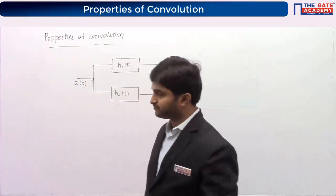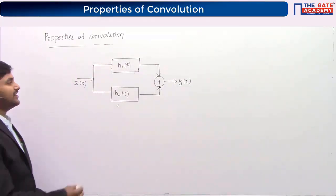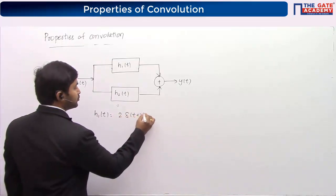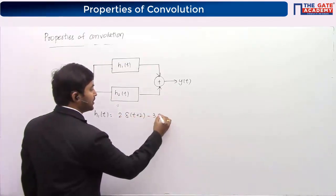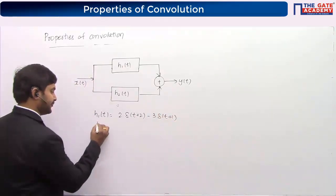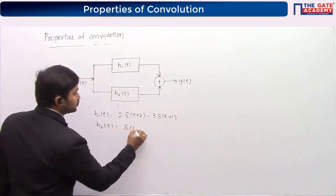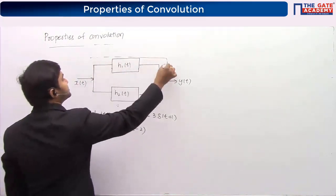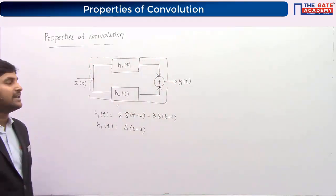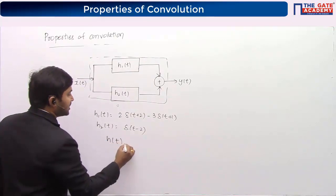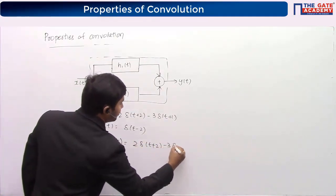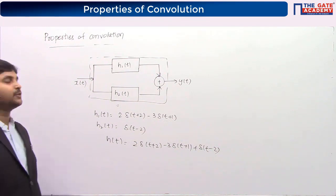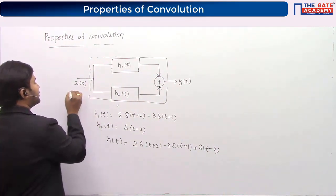Impulse responses H1(T) and H2(T) are given: H1(T) = 2·δ(T+2) − 3·δ(T+1), and H2(T) = δ(T−2). These two systems are connected in parallel, so the overall impulse response H(T) = H1(T) + H2(T) = 2·δ(T+2) − 3·δ(T+1) + δ(T−2). The input given is U(T), a step function.